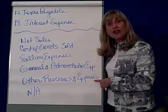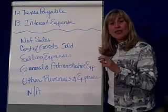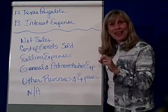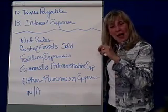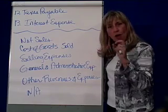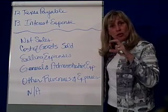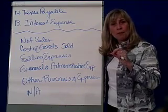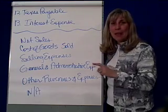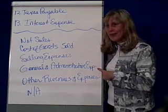The other method is called the single step. The single step just lumps all our revenues together, totals them up, lumps all of our expenses together, totals them up, and takes the difference to find net income. But let's take a look at the multi-step.